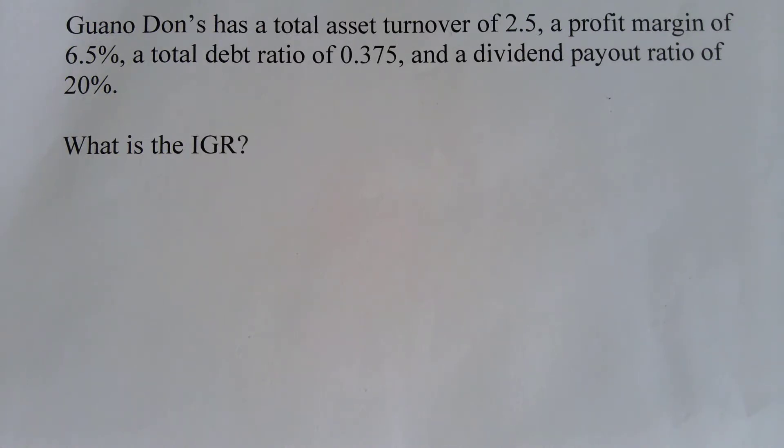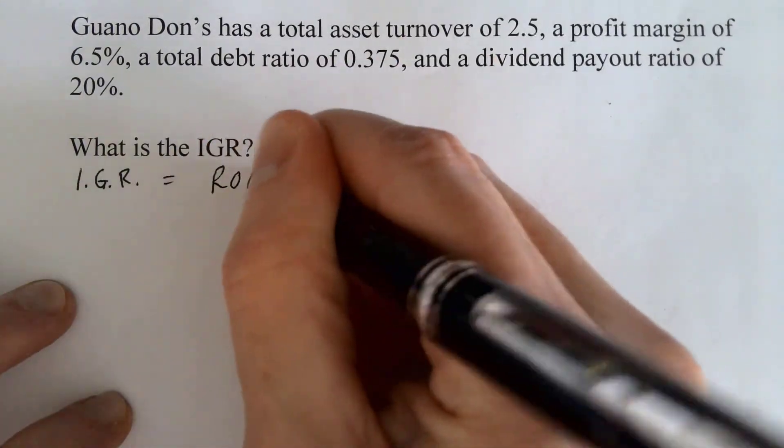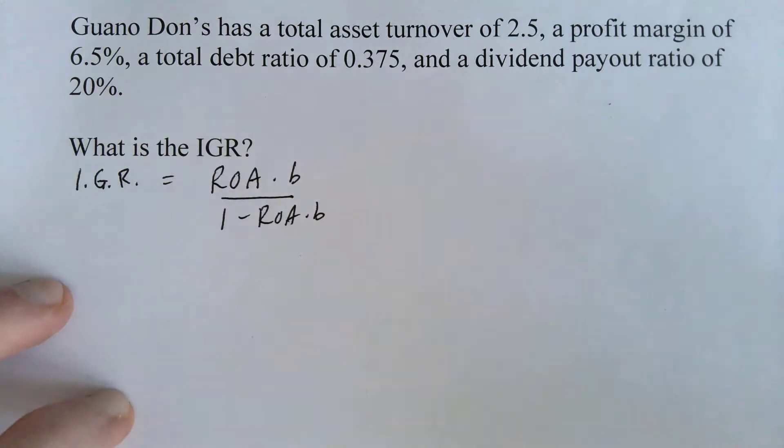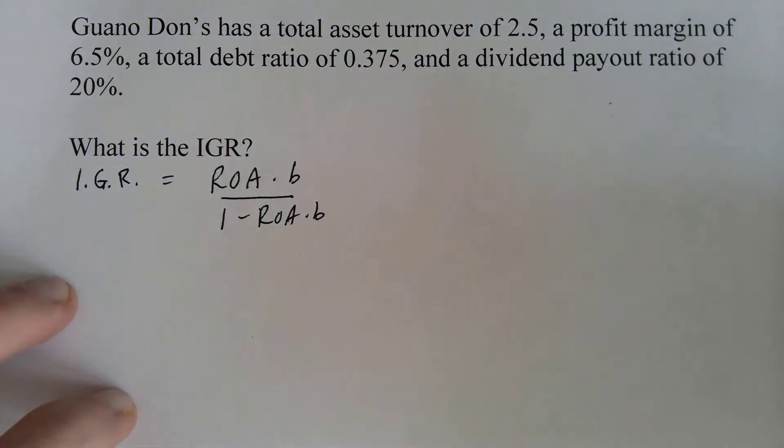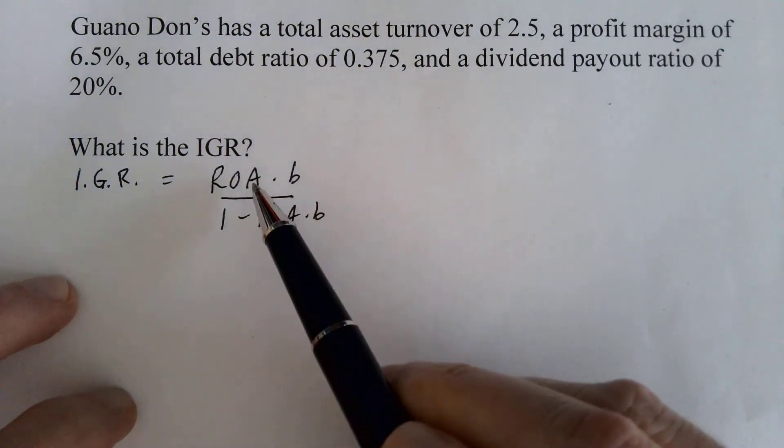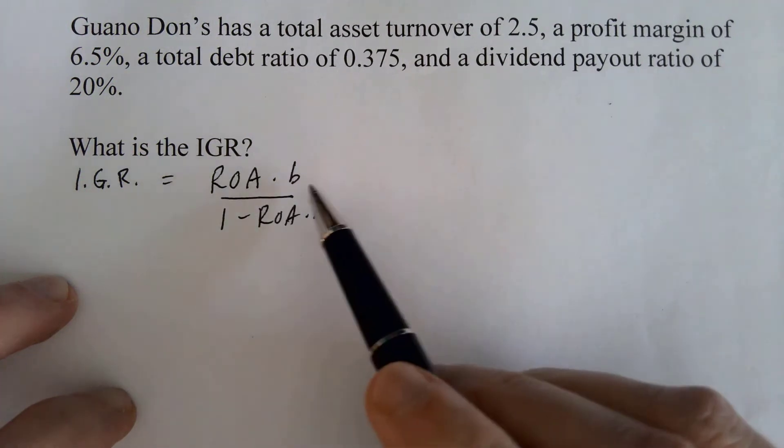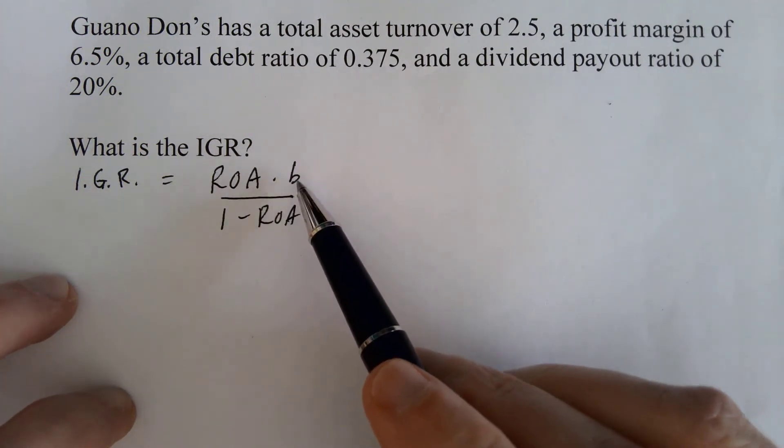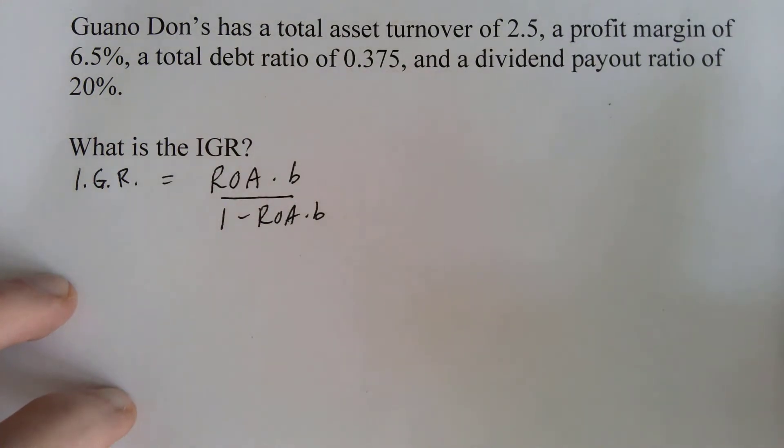Well, the internal growth rate is the rate at which the firm can grow on internal equity alone. And this is the formula. Notice that we have to have return on assets, and then something people are less familiar with is B. B is the retention ratio or the plowback ratio.